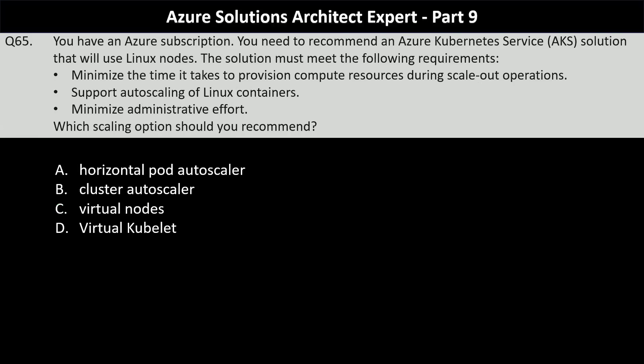Question number 65. You have an Azure subscription. You need to recommend an Azure Kubernetes solution that will use Linux nodes. The solution must minimize the time it takes to provision compute resources during scale-out operations, support autoscaling of Linux containers, and minimize administrative effort. Which scaling option should you recommend? Your options are: horizontal pod autoscaler, cluster autoscaler, virtual nodes, or virtual kubelet.